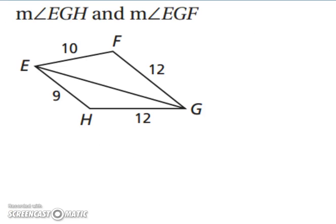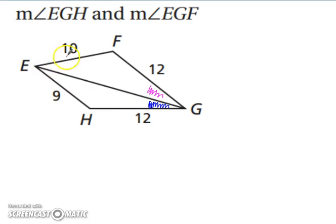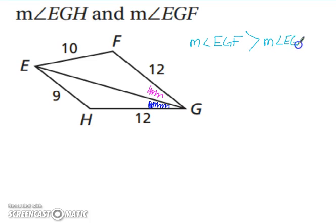Let's try comparing angle measures: the measure of angle EGH versus the measure of angle EGF. FG and HG are the same length, and they both share EG, so that's the same length. We can now look at our third side — we have 9 and 10. The larger angle is across from the largest side, so the measure of angle EGF is going to be greater than the measure of angle EGH.